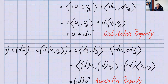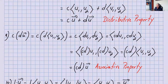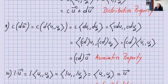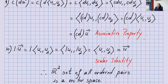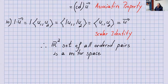Axiom nine: C times (DU) — use the components. C is outside, DU is inside, so you get (CDU₁, CDU₂). Using parentheses, these are just numbers, so you get CD times (U₁, U₂), which equals CD times U. Associative property of scalar multiplication satisfied. Finally, axiom ten: 1 times U — one times its components gives (1·U₁, 1·U₂) = (U₁, U₂) = U. That's the multiplicative identity.